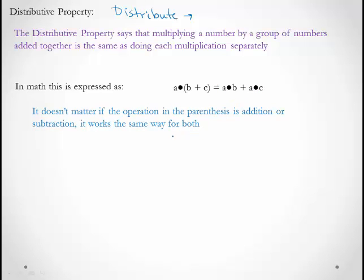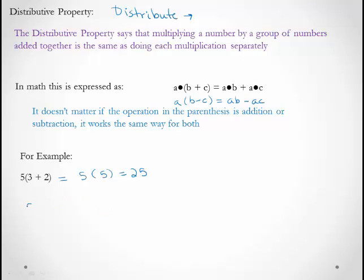It doesn't matter if the operation in parentheses is addition or subtraction — so this could be b − c and would give the same result. For example, 5 × (3 + 2): using the order of operations, I have 5 × 5, which gives me 25. If I use the distributive property, I say 5 × 3 and 5 × 2, and that gives me 15 + 10, which gives me 25. Same result.